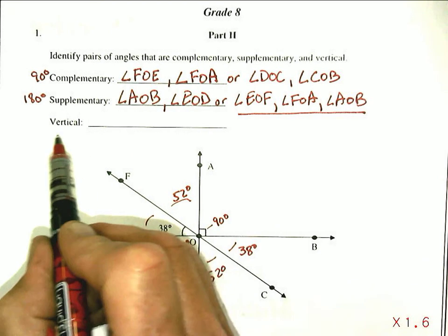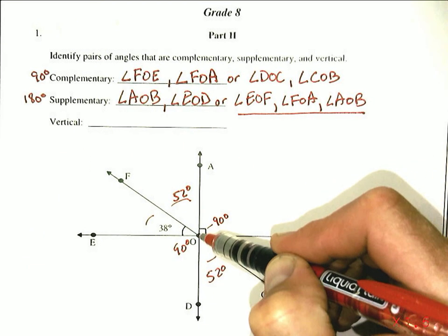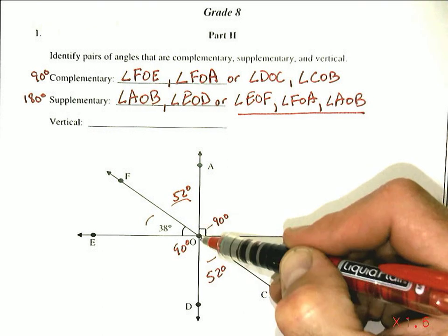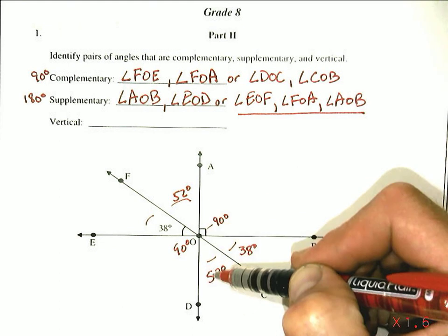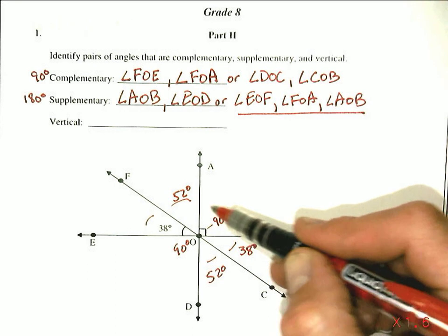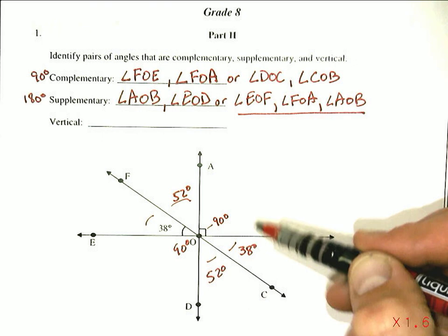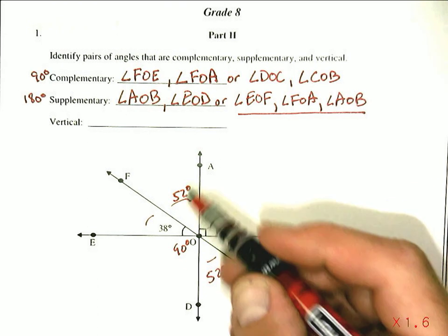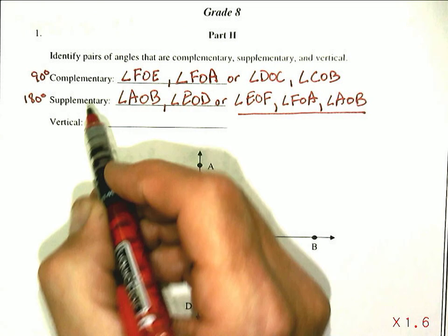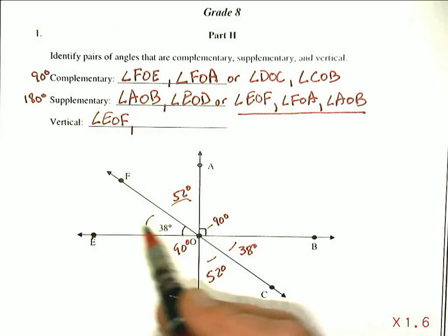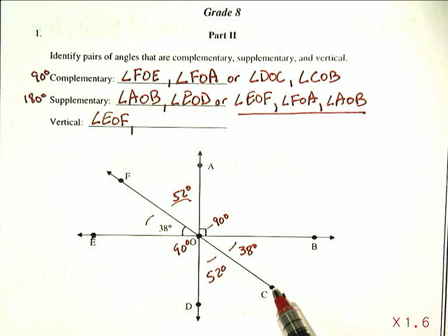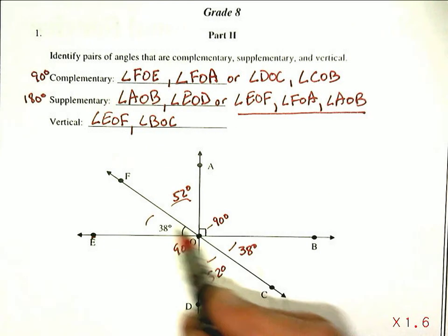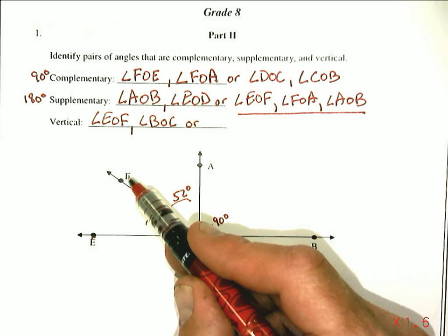The third type listed here is vertical angles. Vertical angles share a common vertex — the point in the center — and are across from each other. They share the same vertex and have the same size. So this one is 52 degrees and so is that one; here's 90 degrees and this one's 90 degrees; this one's 38 and that one's 38. We have three pairs of vertical angles. The first pair: angle EOF and angle BOC are vertical angles.